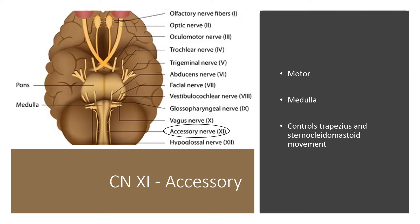Cranial nerve 11 is the accessory nerve. It has a motor function and is located at the medulla. This cranial nerve controls the movement of your trapezius and sternocleidomastoid muscles.